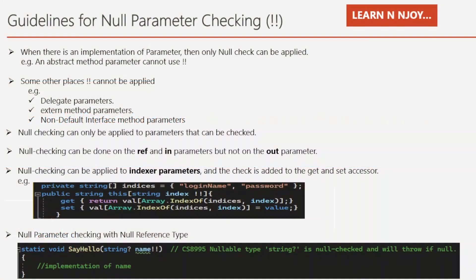Now, guidelines for null parameter checking in C# 11. Number one: null checking can only be applied when there is an implementation of the parameter — for example, an abstract method parameter cannot use null parameter checking, since abstract methods have no implementation. Other places where it cannot be applied include: delegate parameters, extern method parameters, and non-default interface method parameters. Null checking can only be applied to parameters that can be checked — it can be done on ref and in parameters, but not on out parameters.